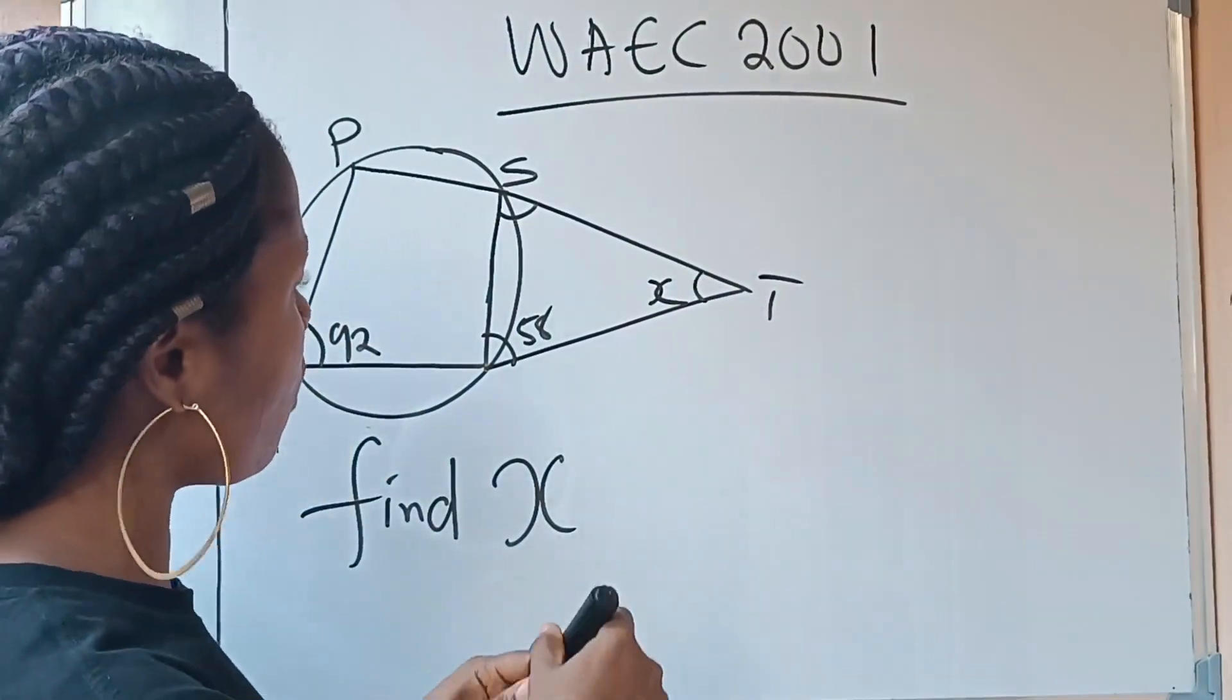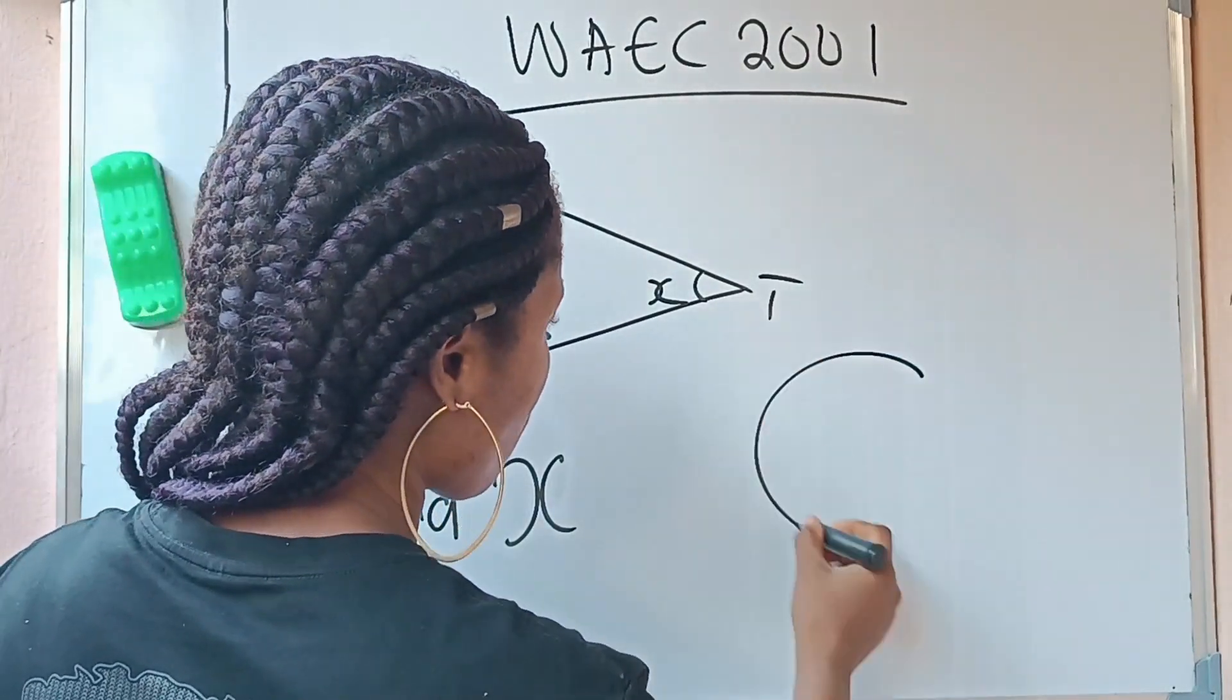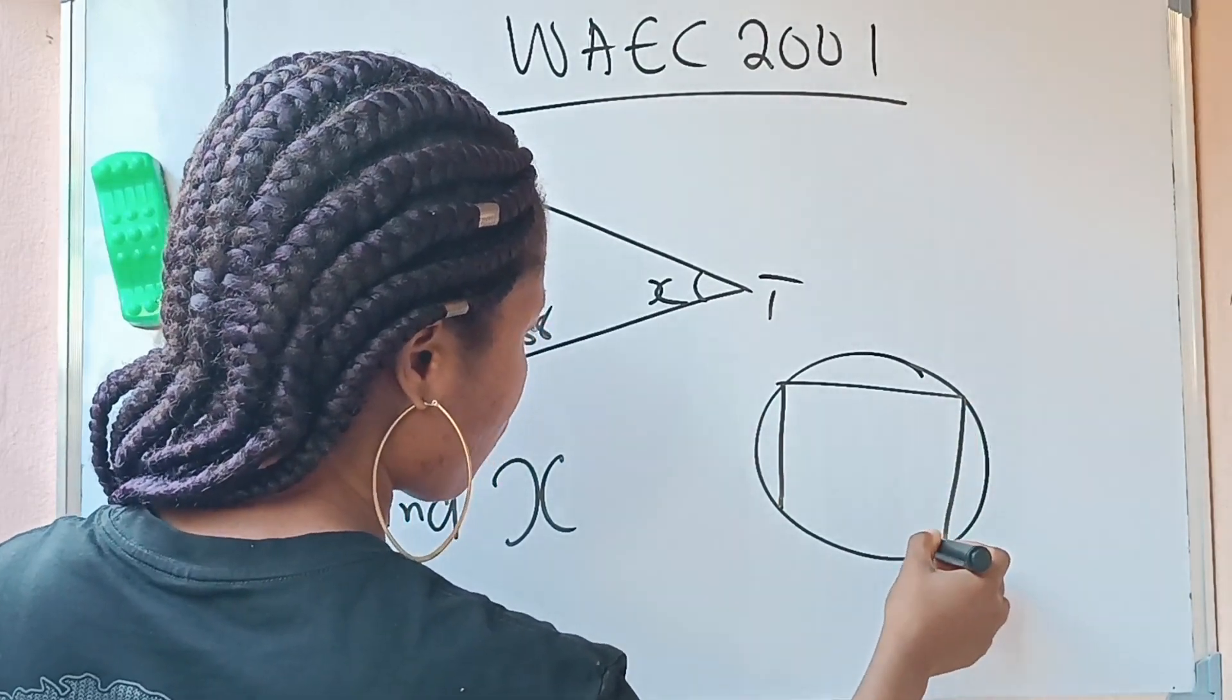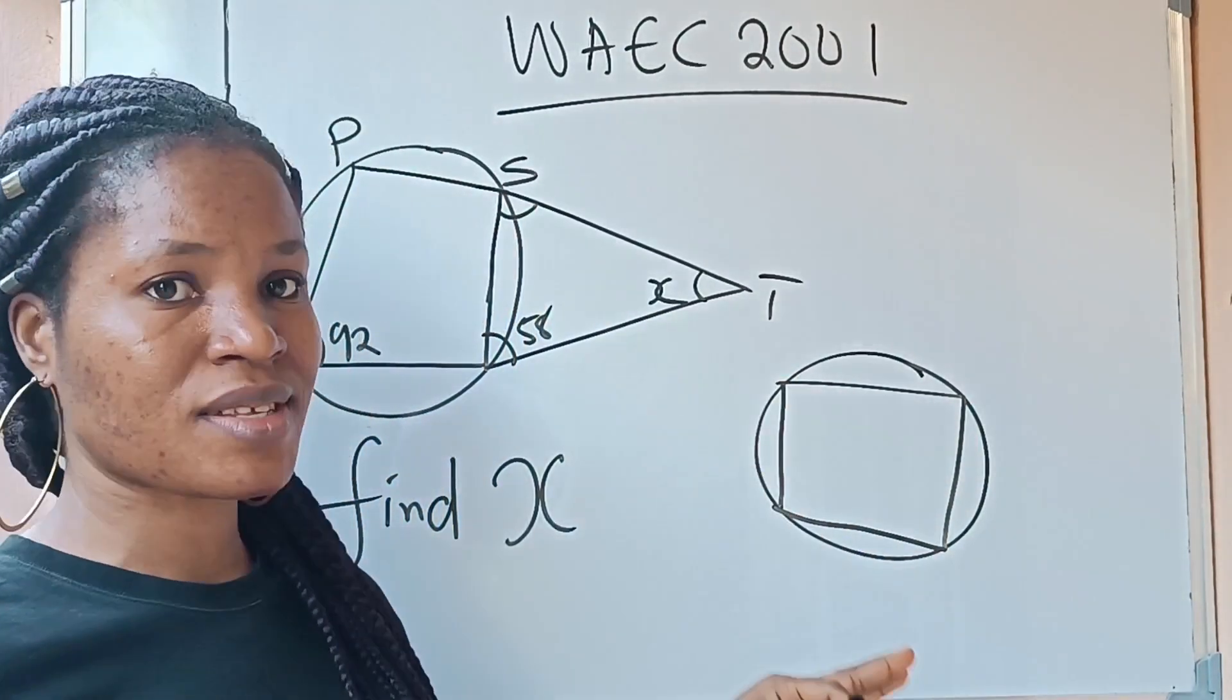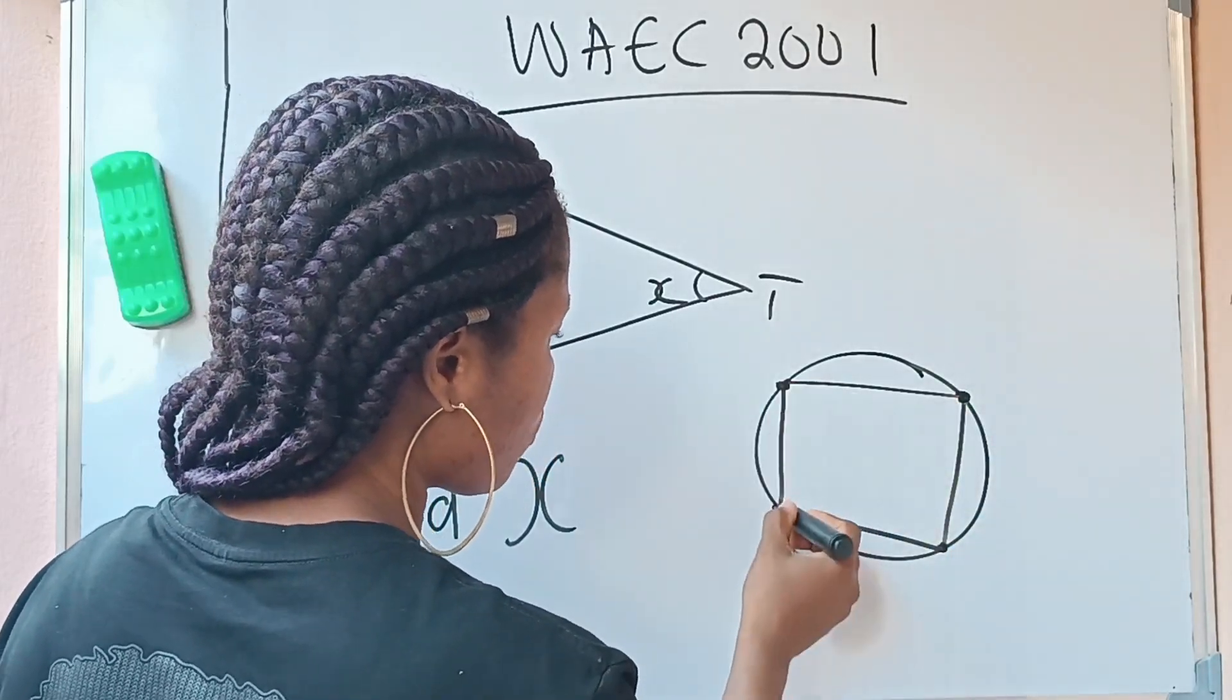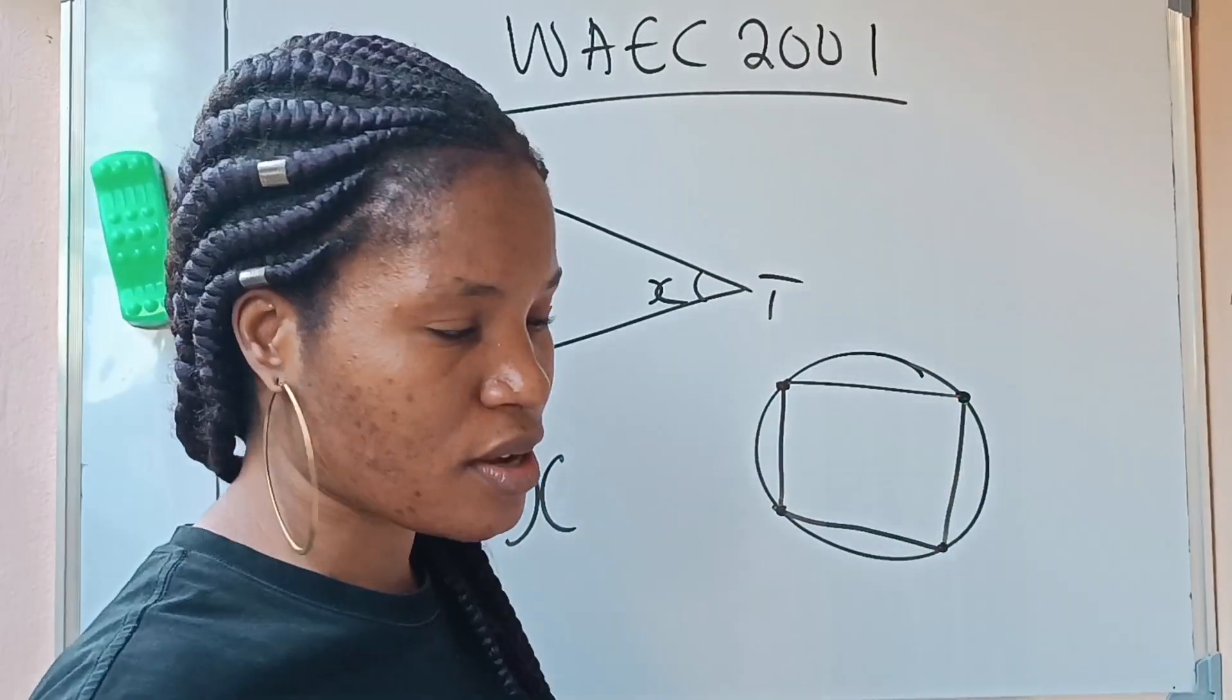Cyclic quadrilateral is when you have a circle, and you have a four-sided figure inscribed inside the circle. Not just that it is inscribed inside the circle, the four edges must be touching the circle for it to be a cyclic quadrilateral.